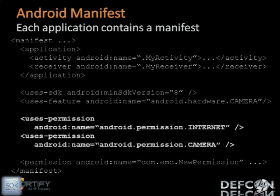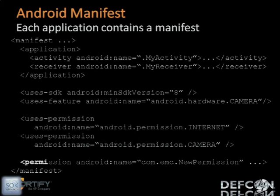Most importantly, the manifest is where permissions are requested. As Katrina said, these are things that are denied or granted at install time. Here we have an example where this application is requesting the internet and camera permissions. Developers can also create their own permissions, and these will be applied to the global system. Here we have a new permission being created, and the developer can also set how that permission is to be obtained.